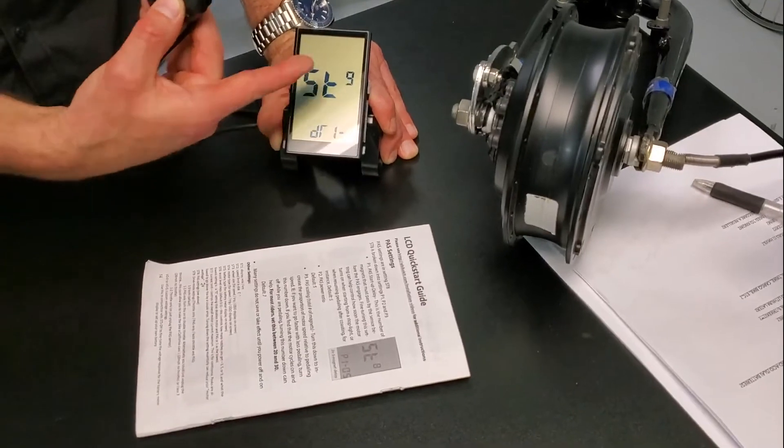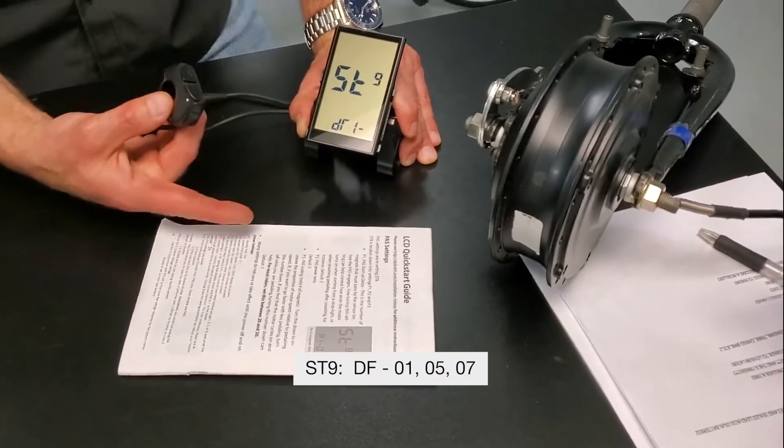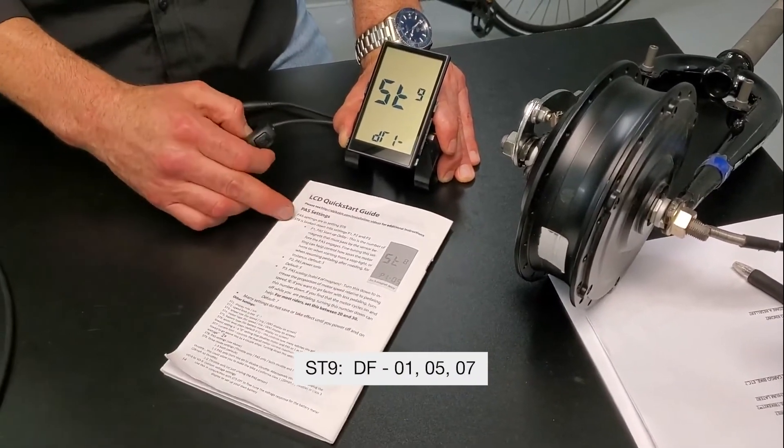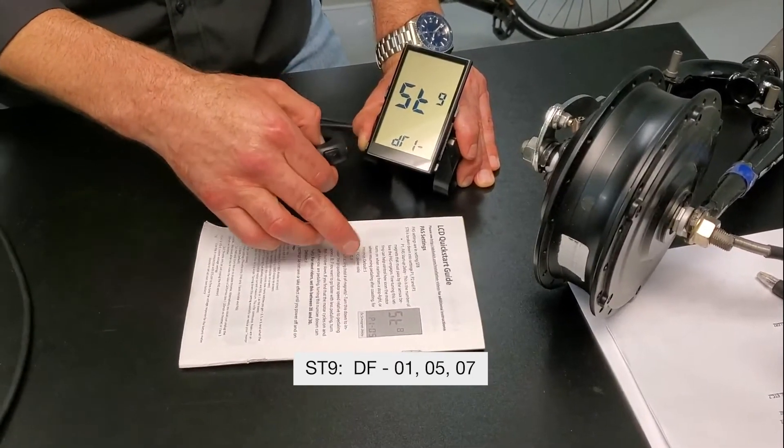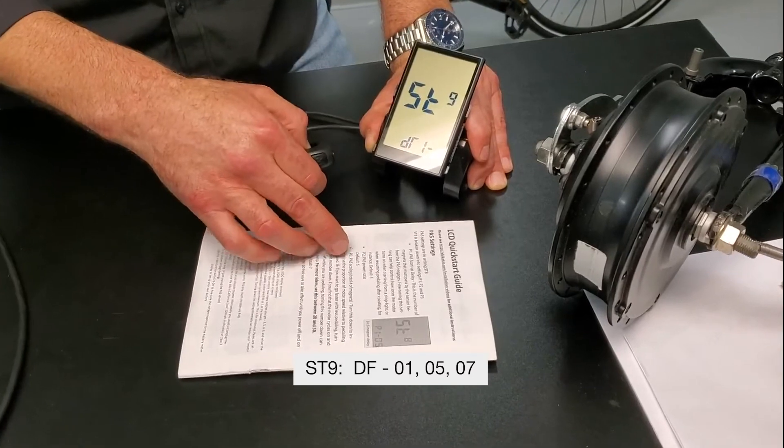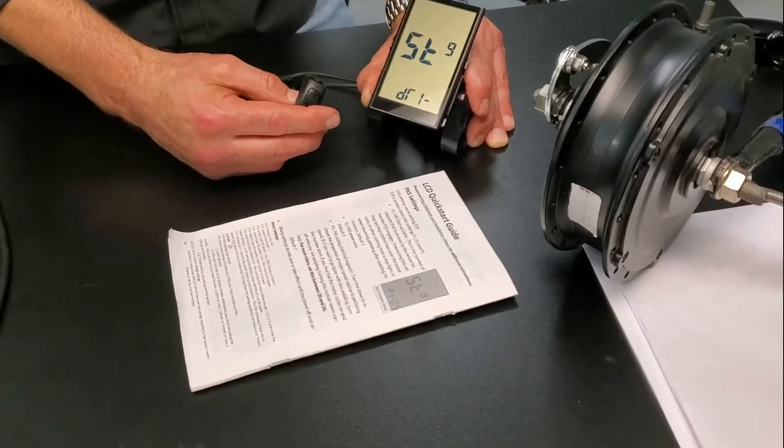When you click M again, it's going to take you to the next setting, ST9. So the pedal assist has been set up right back to the default. Those defaults are going to be P1 is going to be 5, the second setting is going to be 5, and the third is going to be 7, just like I showed you.